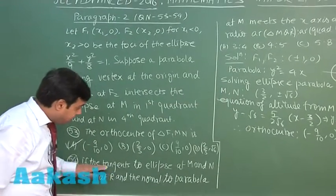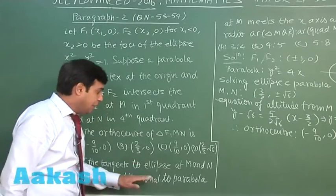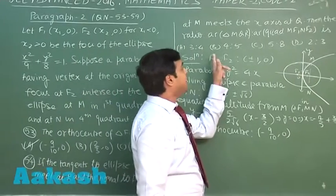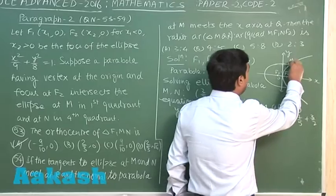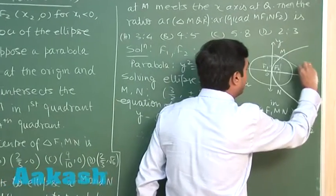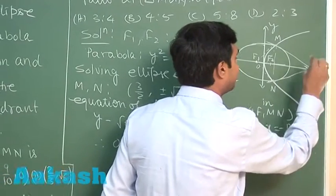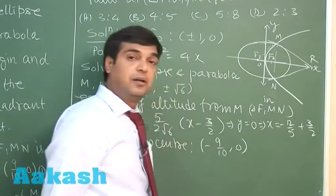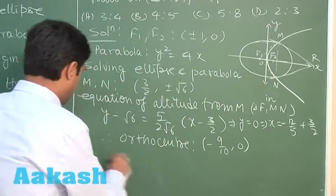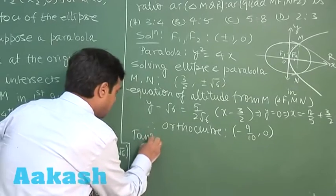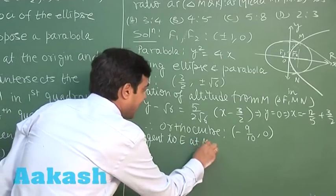Next, if the tangents to the ellipse at M and N meet at R, and normal to the parabola at M meets the x-axis at Q. Tangents to ellipse at M and N, clearly being symmetry, we can say that these are intersecting on the x-axis at point R. So it is sufficient to find just one tangent in order to get the point M.